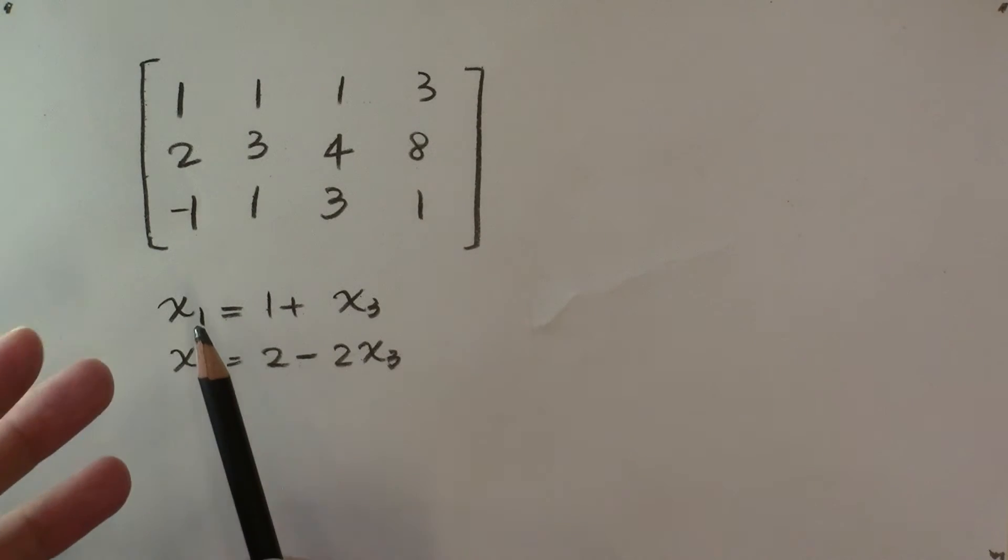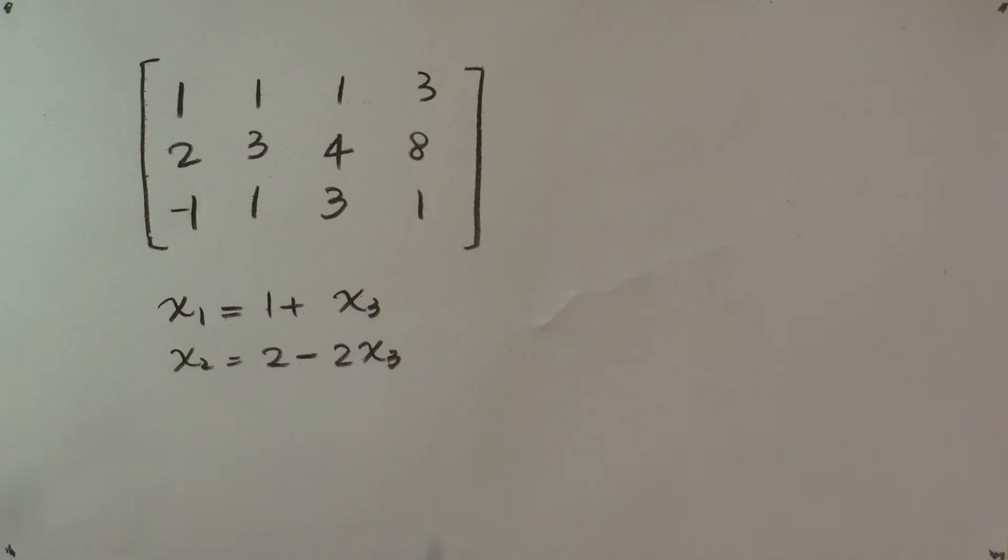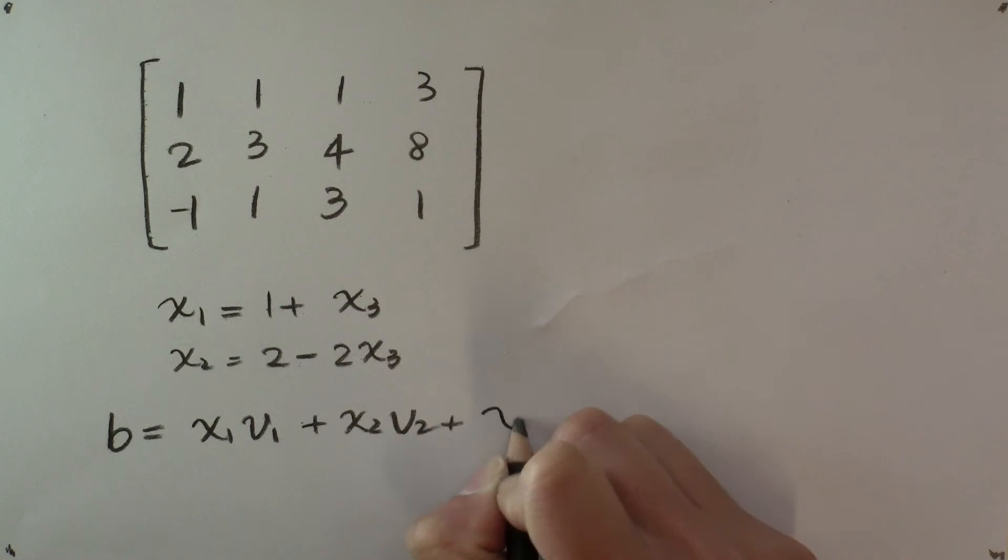Not only do we have possible coefficients x₁, x₂, and x₃ so that b can be expressed as x₁v₁ + x₂v₂ + x₃v₃, but we have infinitely many possible coefficients like that. For example,